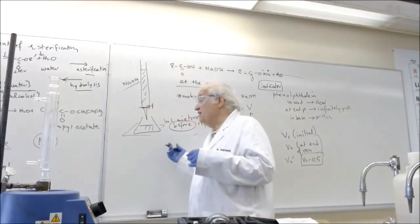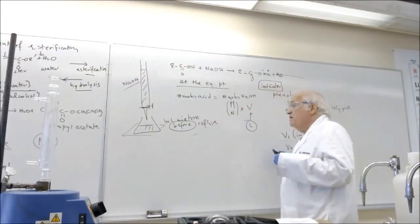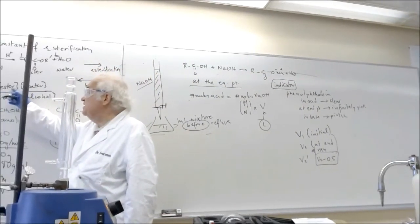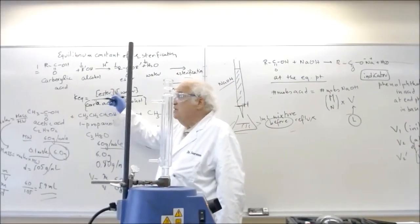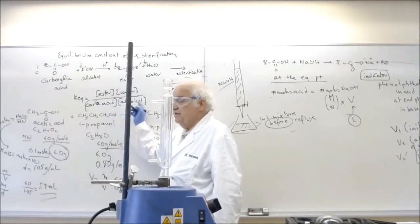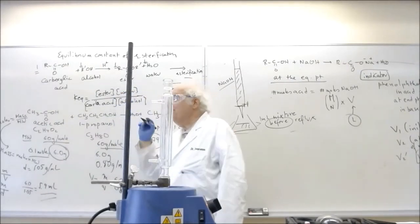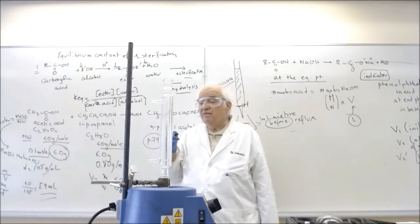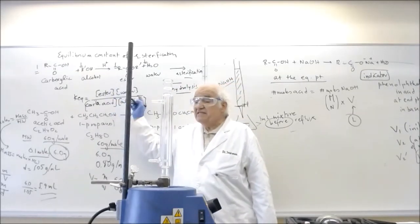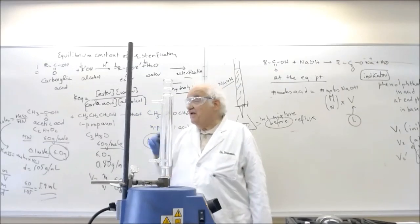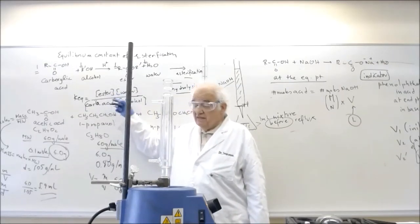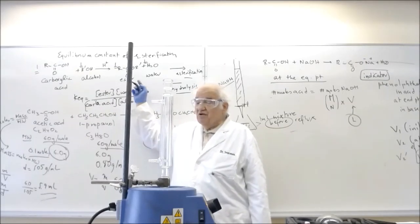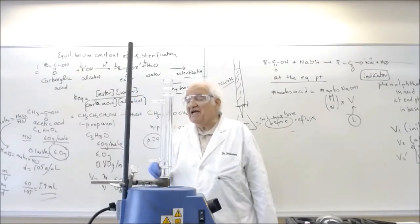Now the question is, all right, so we got these volumes. Remember now, K equilibrium is mass is moles times moles over moles times moles. It's equimolar, right? But moles equals molarity times volume. And the molarity in all cases is supposed to be the same. And so therefore what you can do in calculating the K equilibrium, which has, by the way, no units, because you have square here and square here cancelling out.